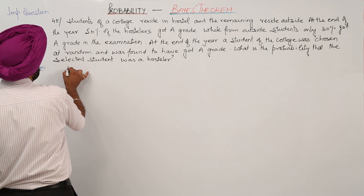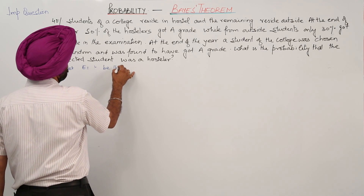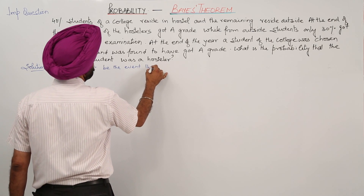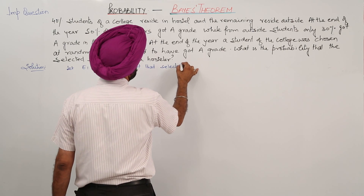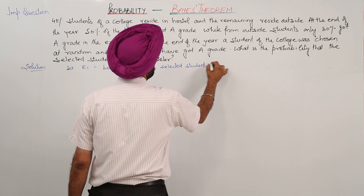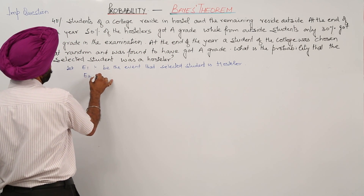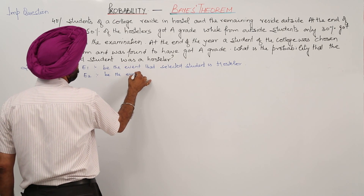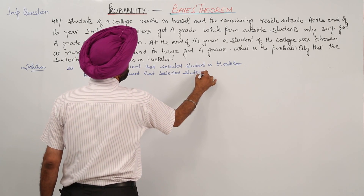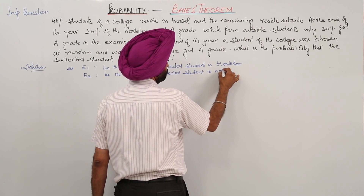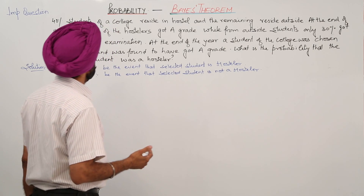Let E1 be the event that the selected student is a hostler. E2 be the event that the selected student is not a hostler — meaning residing outside the hostel.